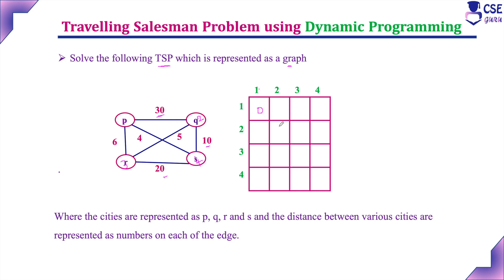The diagonal values — 1 to 1, 2 to 2, 3 to 3, and 4 to 4 — are all 0 since they represent self-loops. Next, 1 to 2 (P to Q) cost is 30, and 2 to 1 is also 30. The cost 1 to 3 is 6 and 1 to 4 is 4. Cost 2 to 3 is 5 and 2 to 4 is 10. Cost 3 to 1 is 6, 3 to 2 is 5, 3 to 4 is 20, 4 to 1 is 4, 4 to 2 is 10, and 4 to 3 is 20. This is the complete cost adjacency matrix.